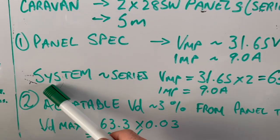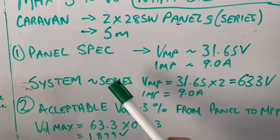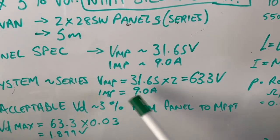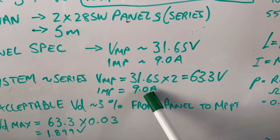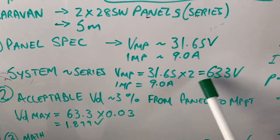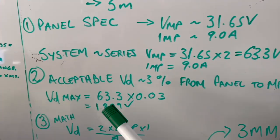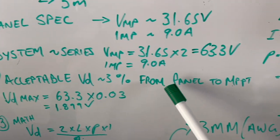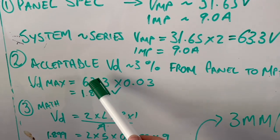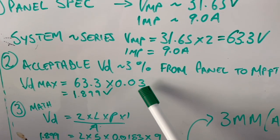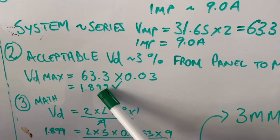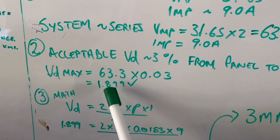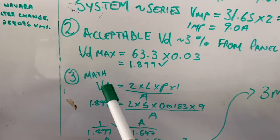So you work out your system information now. They're in series, VMP times by 2, 63.3 volts, IMP is 9 amps. That stays the same. We work out now what an acceptable voltage drop is. So we've said it's 3% from panel to MPPT, so 63.3 times by 0.03 equals 1.899 volt. So that is how much voltage drop we can accept.